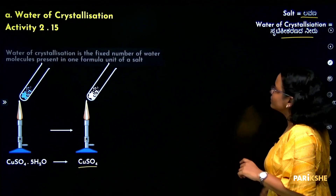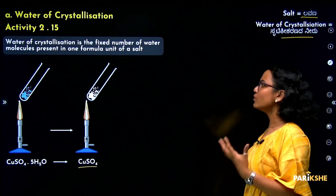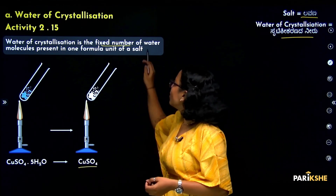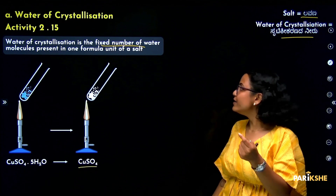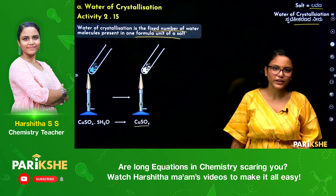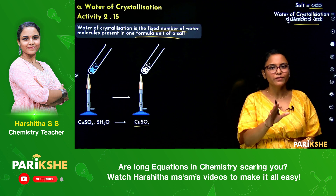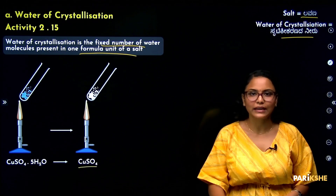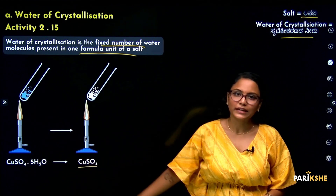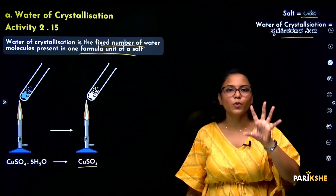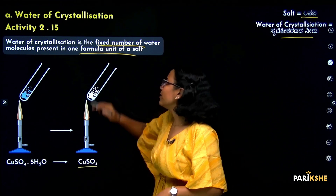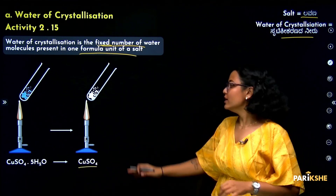The definition of water of crystallization is: the fixed number of water molecules present in one formula unit of a salt. For copper sulphate, this is 5H₂O; the fixed number is 5 molecules of water.